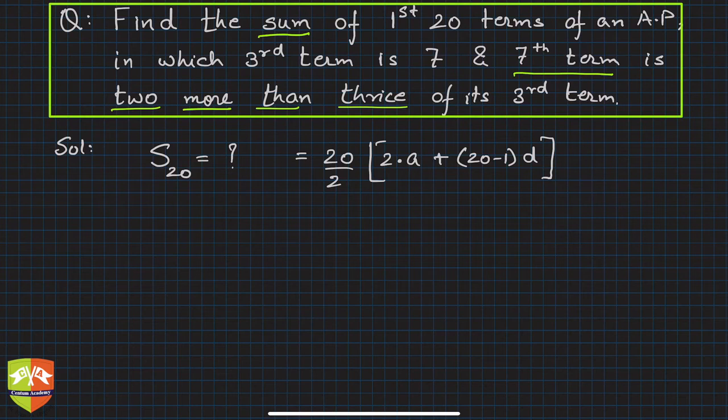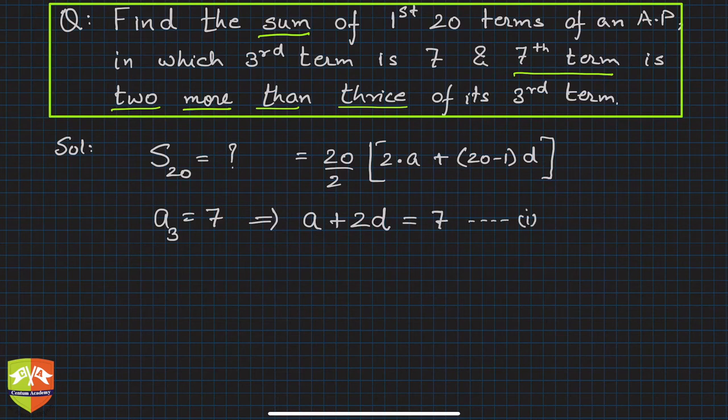Now, third term is 7. a_3 is equal to 7. This implies a_3, what is a_3? a plus 2d, since a_n is a plus (n-1)d. This equals 7, so we get the first relationship. But this is one equation with two variables; we can't solve for a and d. We cannot get one exact solution, so let's go for the second condition.